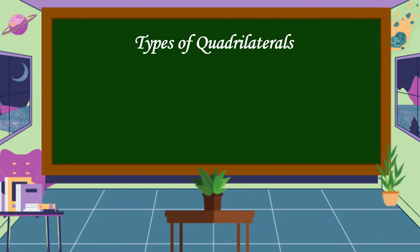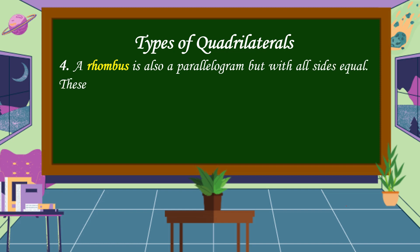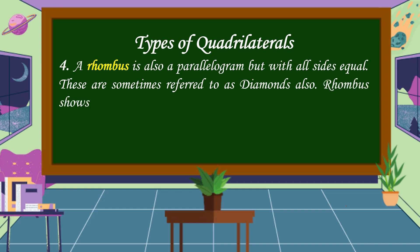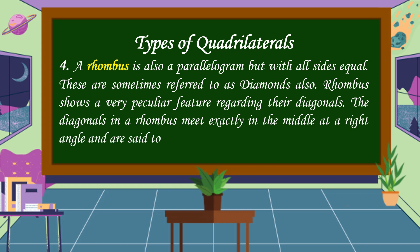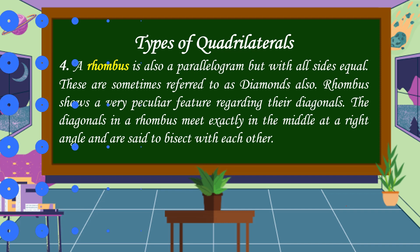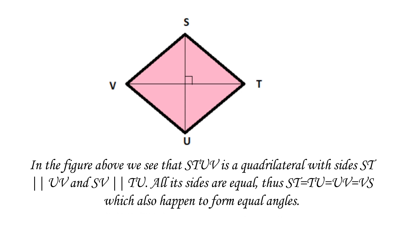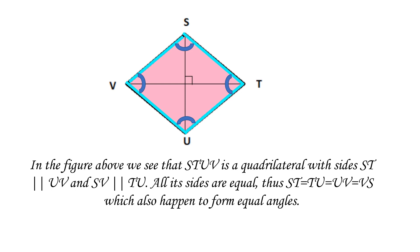The fourth type of quadrilaterals is a rhombus. A rhombus is also a parallelogram but with all sides equal. These are sometimes referred to as diamonds. Rhombus shows a very peculiar feature regarding their diagonals: the diagonals in a rhombus meet exactly in the middle at a right angle and are said to bisect each other. In the figure above, STUV is a quadrilateral with ST parallel to UV and SV parallel to TU. All its sides are equal: ST equals TU, equals UV, equals VS, which also happen to form equal angles. This is an example of a rhombus.